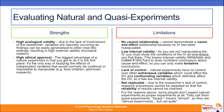For all these reasons, some people don't regard natural experiments as proper experiments at all — they call them quasi experiments. Quasi means 'almost,' so they are almost experiments, but not quite. This is what we have in terms of contesting whether psychology is a science, because there are a lot of experiments which fall under the category of natural and quasi experiments.